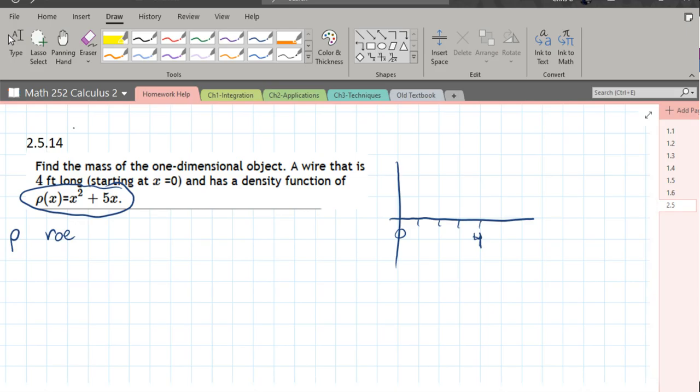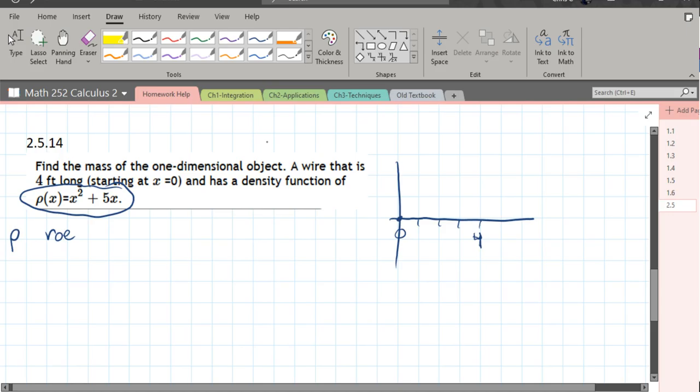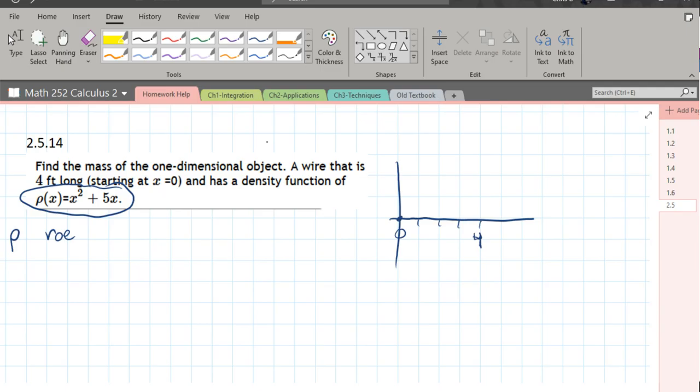Negative five. So anyways, whatever this looks like, we need to... It's a happy parabola, so it's going to look something like this.